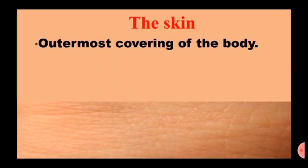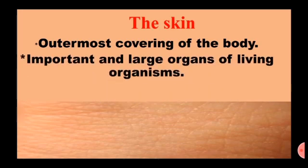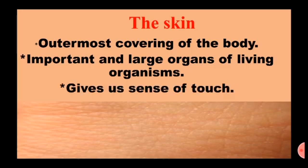The outermost covering of the body is called the skin. The skin is an important sensory organ of all living things. There are nails on the skin at the tips of the fingers and toes. The skin gives a sense of touch.